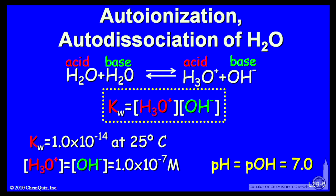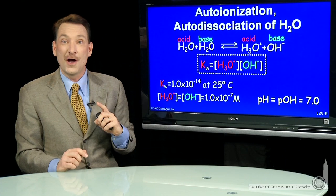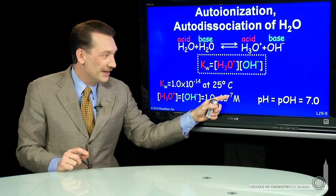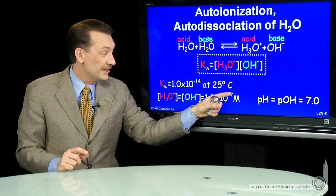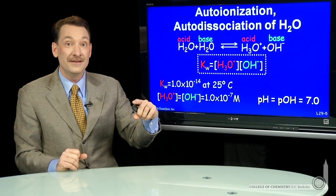We define the pH of a solution as the minus log, log base 10 of H3O+, is the pH. Minus log base 10 of the OH- is the pOH. And recall when you take the log, you're taking the exponent. Log base 10 of 10 to the exponent is just the exponent. So minus log of 10 to the minus 7 is 7.